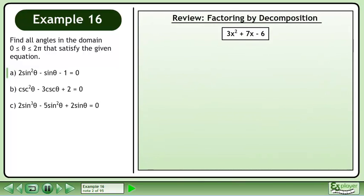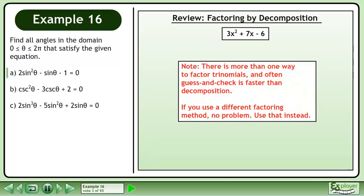Let's review factoring by decomposition by factoring 3x² + 7x - 6. Note that there is more than one way to factor trinomials, and often guess and check is faster than decomposition. If you use a different factoring method, no problem — use that instead.